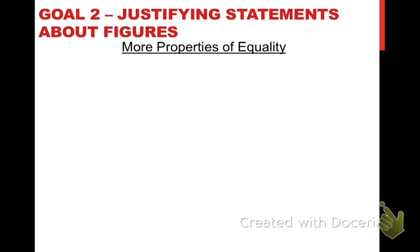In our previous video, we were learning to use properties of equality including the addition, subtraction, multiplication, division, and substitution properties in order to justify statements about equations. Now, we're going to learn a few new properties in order to justify statements made about figures. These will still be properties of equality, and we're going to begin with the reflexive property, which at first glance seems to be the most obvious thing in the world, but it will be useful to us, especially when we do congruent triangle proofs later in the course.